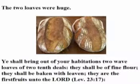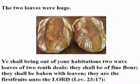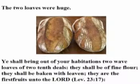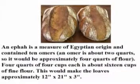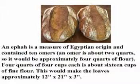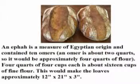"Ye shall bring out of your habitations two wave loaves of two tenth deals; they shall be of fine flour, and they shall be baked with leaven; they are the first fruits unto the Lord." Leviticus 23:17. An ephah is a measure of Egyptian origin and contained two omers; an omer is about two quarts, so it would be approximately four quarts of flour.